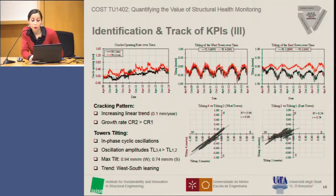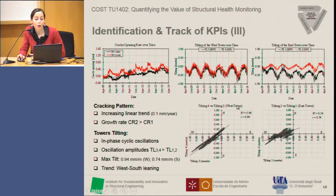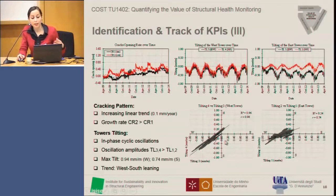This is the temporal evolution of both crack opening rate and tower tilting over five years of monitoring, as the system has been working since April 2009. Looking at the evolution of the crack opening rate over time, there is a linear increasing trend with an opening rate of 0.1 mm per year, which is higher for the external crack, highlighted in red. Regarding tower tilting, both towers present a common in-phase cyclic oscillation in both the east-west and north-south directions, but the oscillation amplitudes are higher for the western tower, which also shows a greater trend of leaning towards the south direction, reaching tilting values of almost one millimeter per meter.